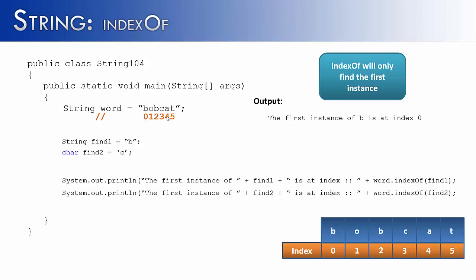Let's say instead of looking for B, I was looking for C. Notice this time I'm using a character instead of a string. Will it work to search this way? Well, yes. Yes, it will. And it would find the C at index 3. So when I print this out, it would say the first instance of C is at index 3.